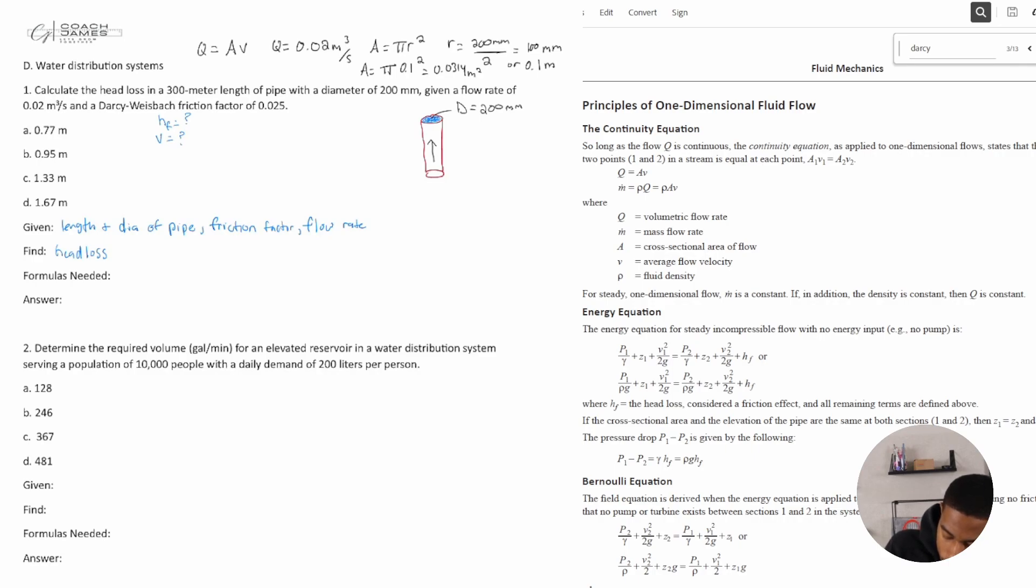So we now have A and we have Q. So how do we get v? Well, Q is equal to A times v. Q is 0.02 meters cubed per second, which is equal to 0.02 meters squared times v. All right, so when you divide both sides, you get v to equal 0.636 meters per second. Okay, so we have v.